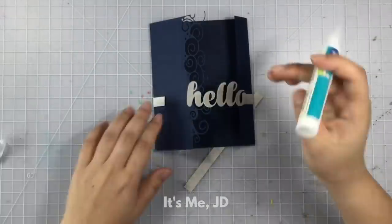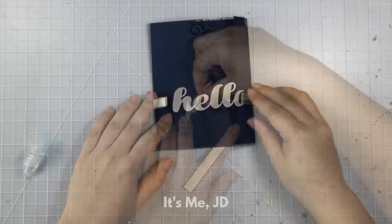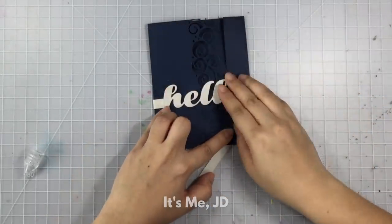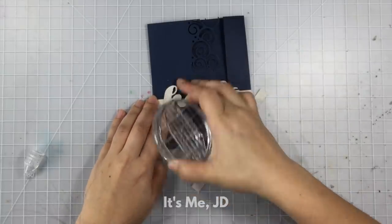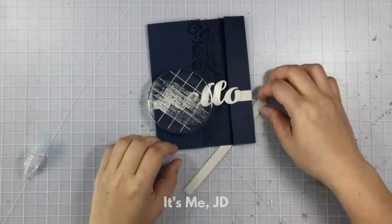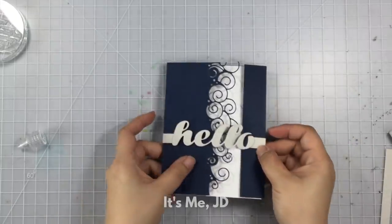I'll put some glue down to adhere the other side of the word die cut and then I'll set something heavy on top just to weigh it down and make sure it sticks. Once it dries you'll have a fun word die cut belly band.